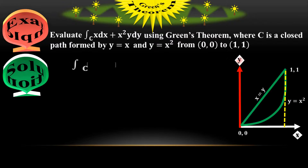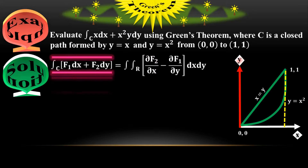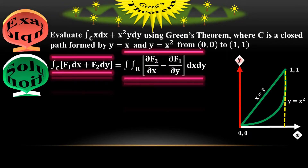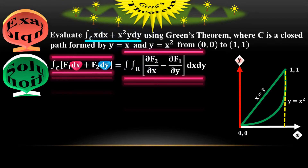According to Green's theorem, the line integral is equal to the double surface integral on the right side — the left side is always equal to the right side. Comparing both sides: f₁ on the left is with respect to x, and on the right side f₁ is differentiated with respect to y, where f₁ equals x. Similarly, f₂ on the left is with respect to y, and on the right side f₂ equals x squared times y.